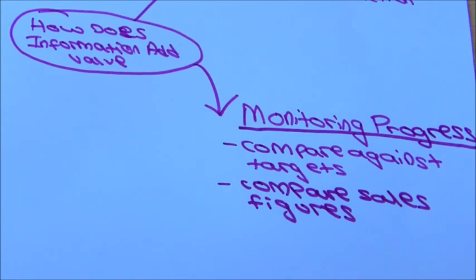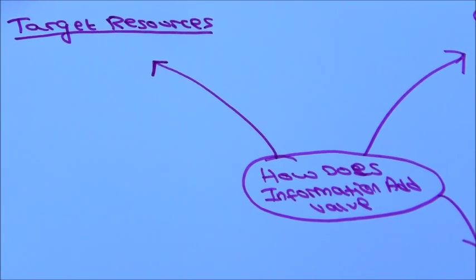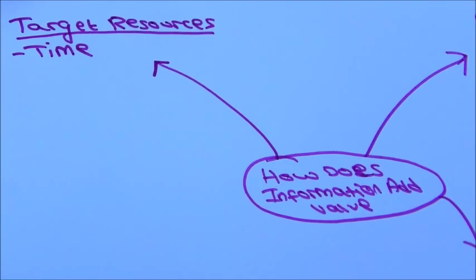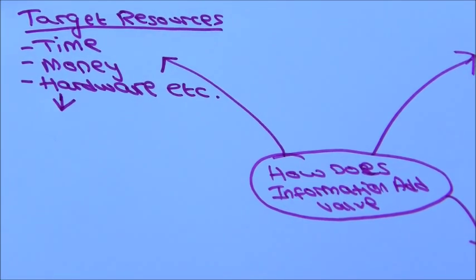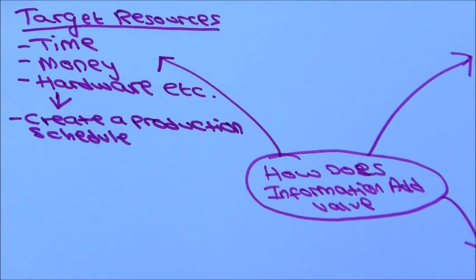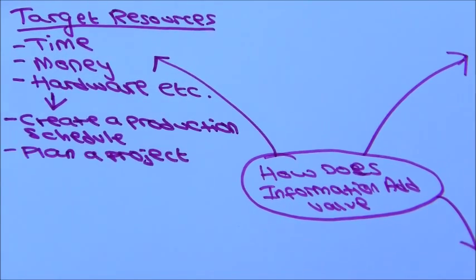You can target resources. Resources include time, money and hardware. These things allow a company to create a production schedule on a project.